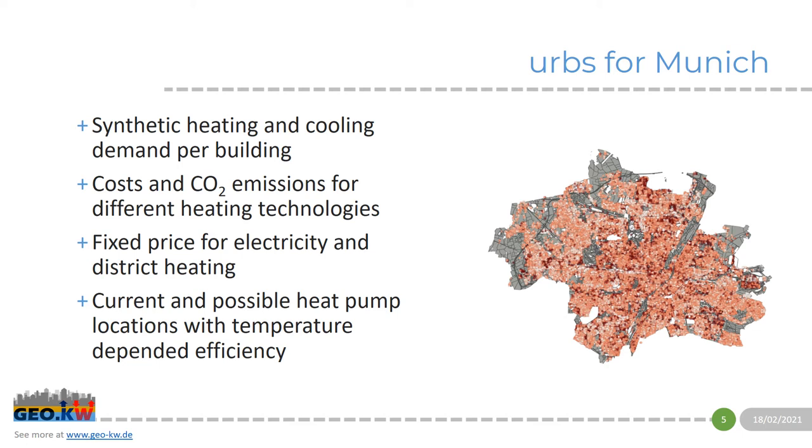Especially in this project we put also the current and possible heat pumps in Munich. Each of the heat pump is allocated to one region. One region can have more than one heat pump, but each heat pump has one region. And then we change the efficiency with the input temperature from PFLOTRAN, which we get from PreCICE. And that's how we couple the model and how we want to optimize the usage of these groundwater heat pumps.